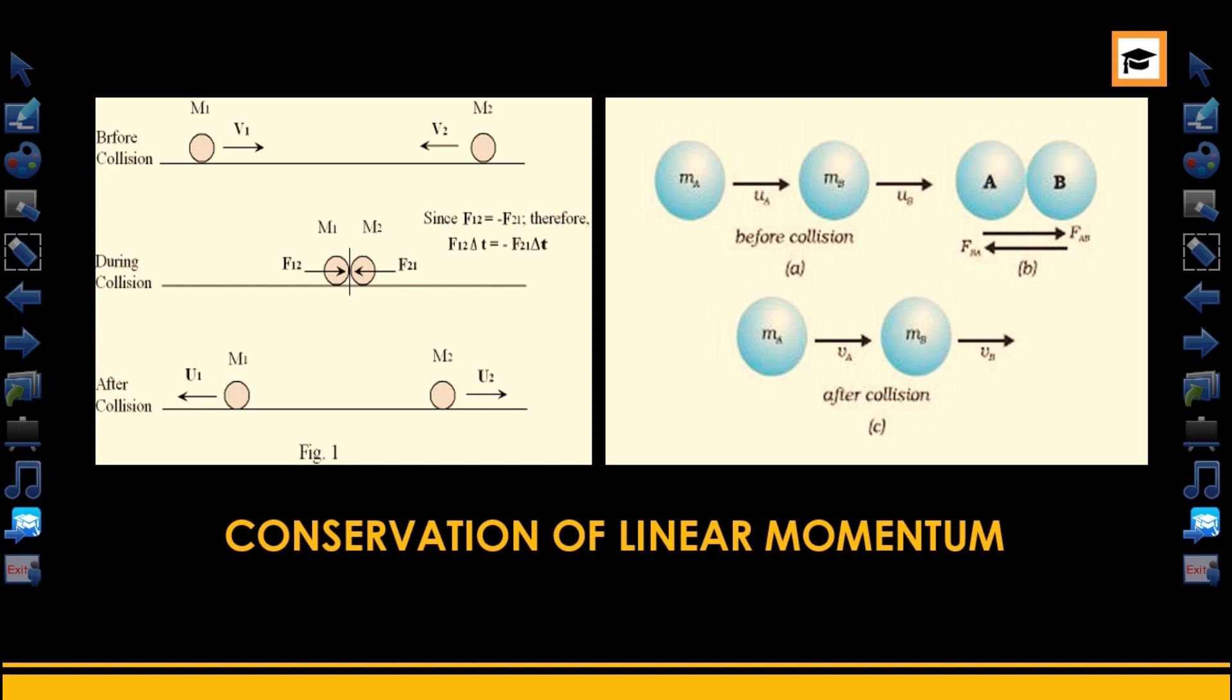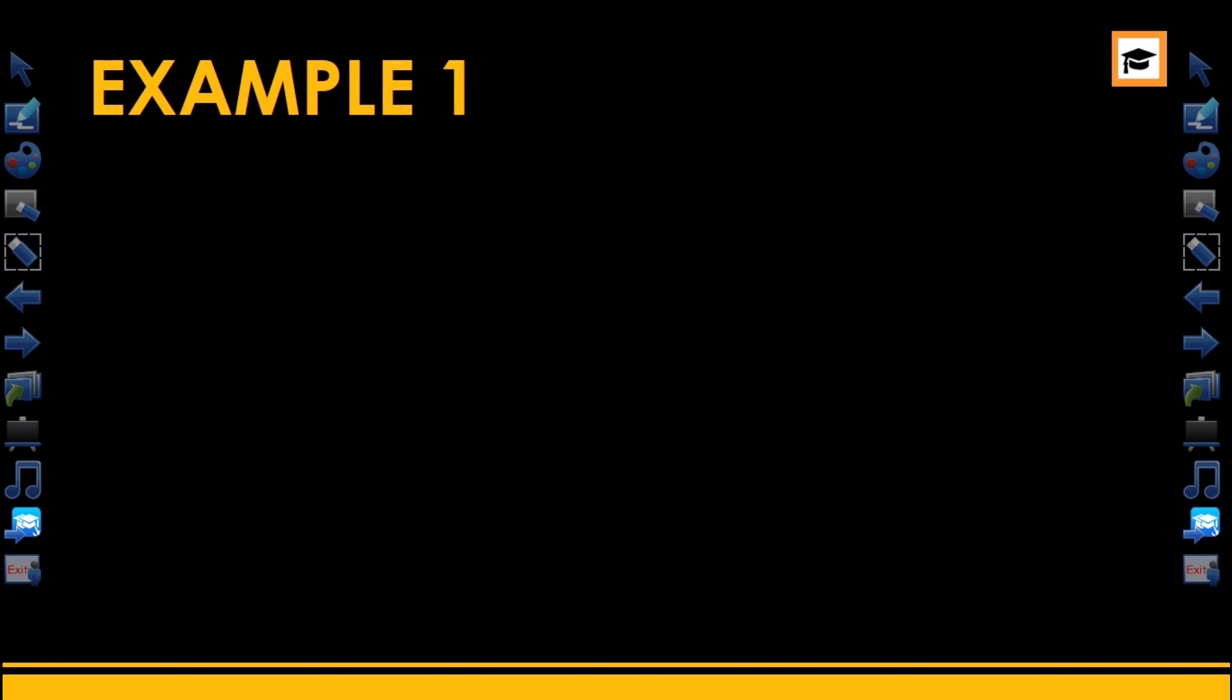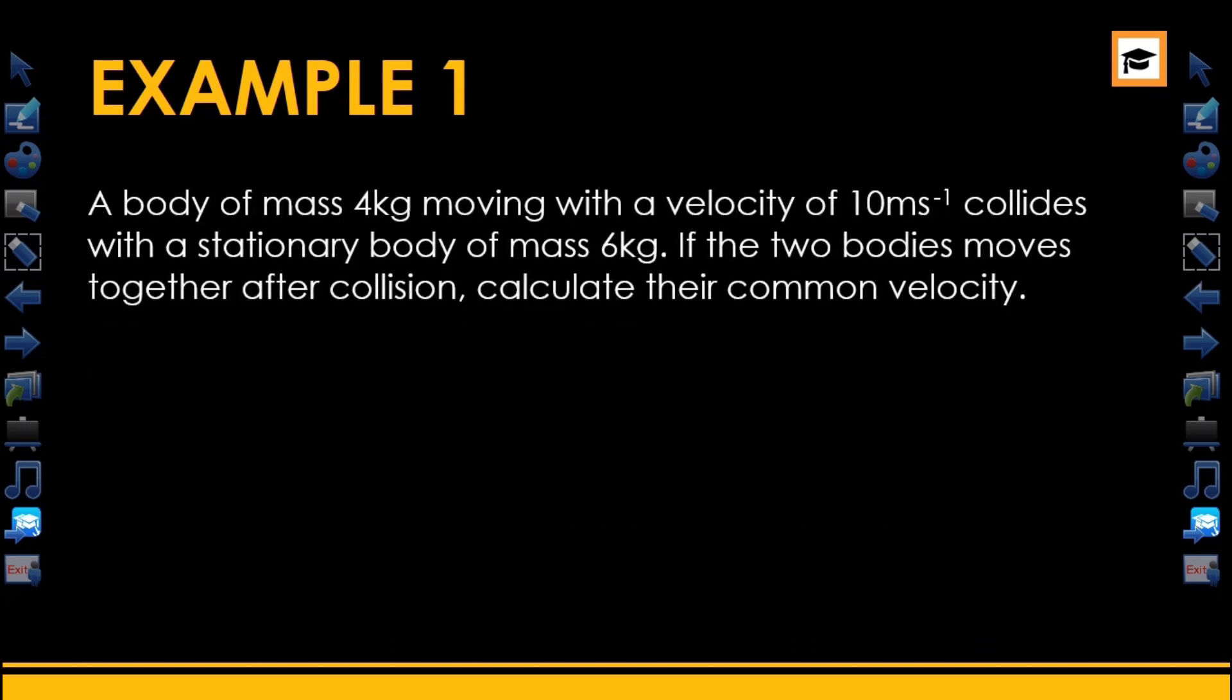So basically, this is how the conservation of law operates. Now let's take a look at examples under the conservation of linear momentum. A body of mass 4 kg, moving with a velocity of 10 meters per second, collides with a stationary body of mass 6 kg.